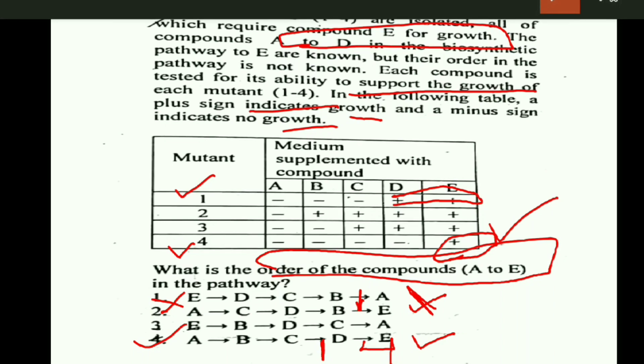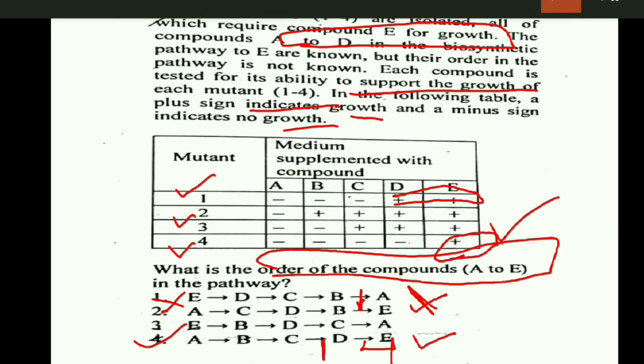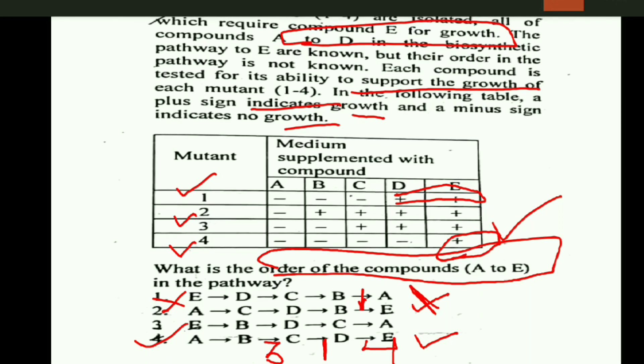In the case of mutant 3, there is growth in C, D, and E. This suggests that compounds C, D, and E are placed after mutant 3 in the pathway, so mutant 3 is placed here. In the case of A and B, there is no growth, so compounds A and B are found in the pathway before mutant 3.